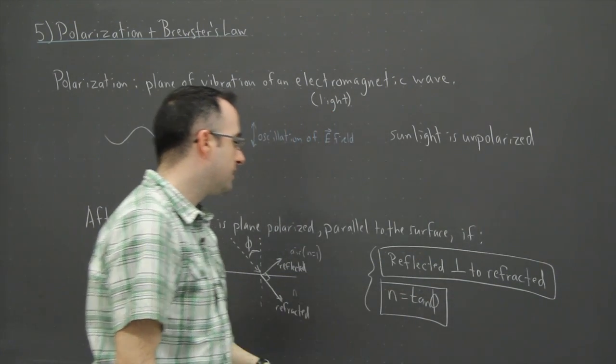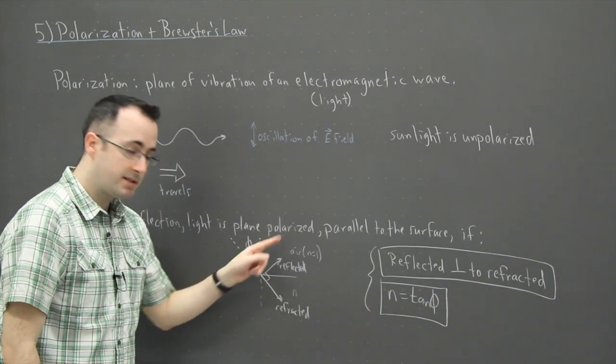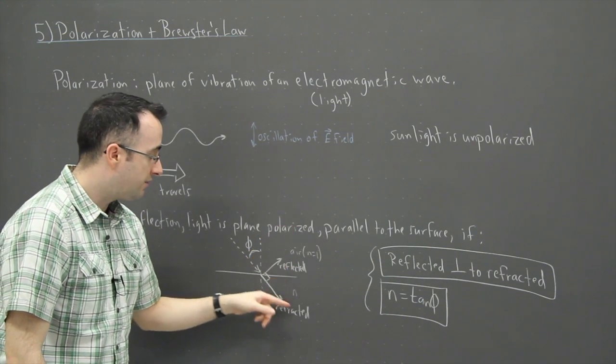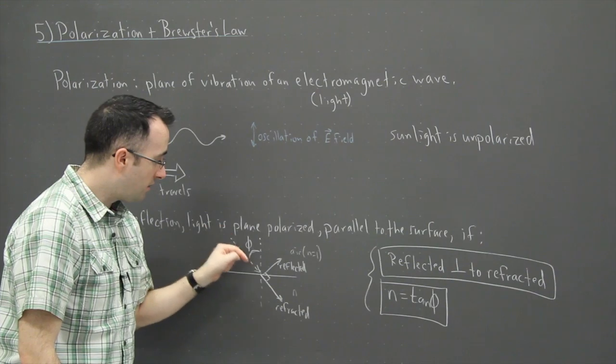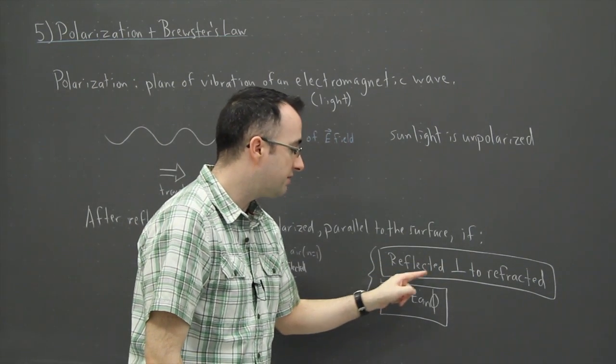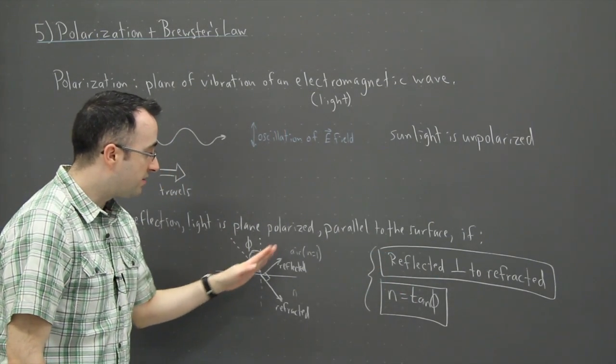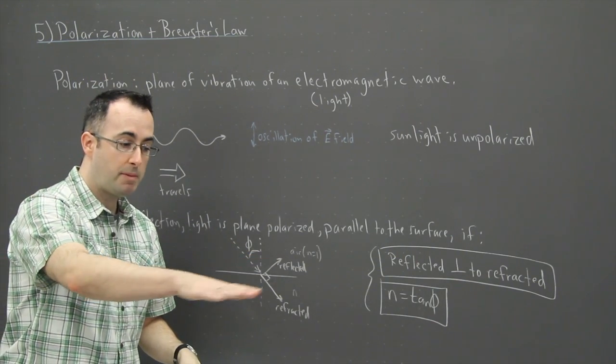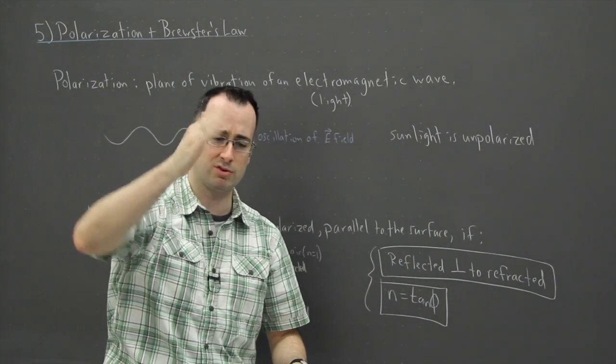So what this tells you then is that, if you've got that situation happening, let's say light is bouncing off, I don't know, water. Then if you know the index of refraction of the water, and if light comes in at a certain angle phi, which is equal to the, well, if I take the tangent of that angle, if that equals the index of refraction of water, then the light that's reflected will be completely plane polarized parallel to the surface.